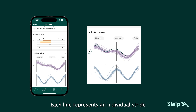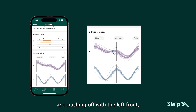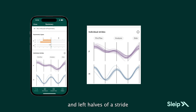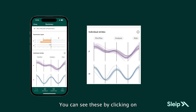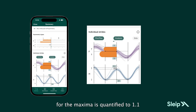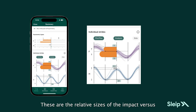Each line represents an individual stride and shows the vertical movements of the head and pelvis, starting with landing on the left front limb and pushing off with the left front, landing on the right front and pushing off with the right front. The differences in the maxima and minima in the vertical displacement of the right and left halves of a stride are calculated to quantify the asymmetry. You can see these by clicking on the min/max and analysis. In this example, the difference in the push-off for the maxima is quantified to 1.1, and the difference in the minima is quantified to 1.5 — these are the relative sizes of the impact versus push-off components of the asymmetry.